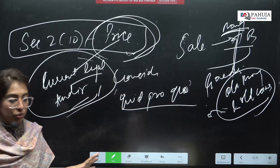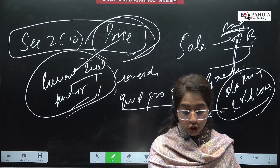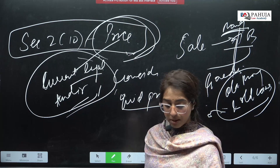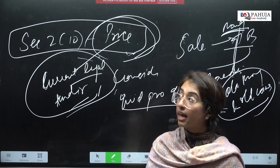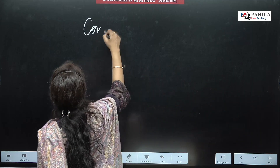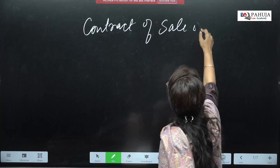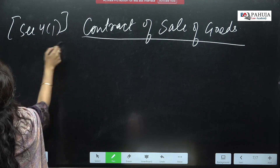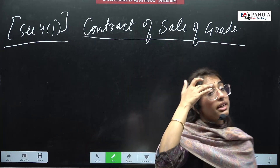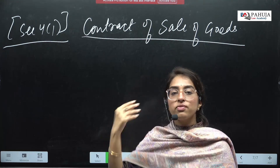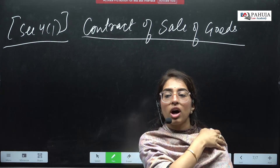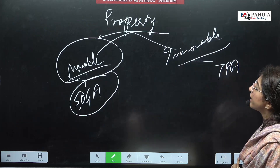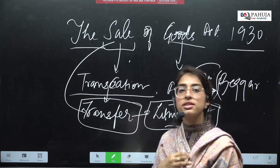I hope this is very clear. Now I will move forward towards the kinds of goods. But before we understand kinds of goods, there is a very important topic to start: Contract of Sale of Goods — this is Section 4, Clause 1. This is the most important section. We study this section in the most detail because this entire Section 4(1) gives a brief of what SOGA is.